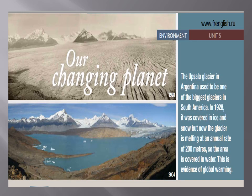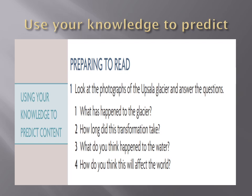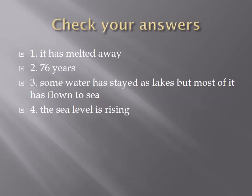Now to Reading One. Look at this picture — our changing planet: the Uppsala Glacier in Argentina. Preparing to read: use your knowledge to predict the content after looking at the photograph. What has happened to the glacier? It melted down. How long did this transformation take? That change took 76 years. Some water stayed as lakes, but most flowed to the sea. And after that? The sea level is rising.